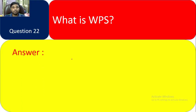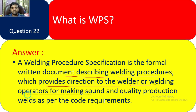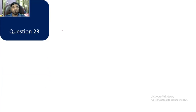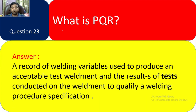Question 22: What is WPS? Answer: A Welding Procedure Specification — it is a formal written document describing the welding procedure which provides direction to the welder or welding operator for making sound and quality production welds as per the code requirement. Question 23: What is PQR? Answer: A Procedure Qualification Record — a record of welding variables used to produce an acceptable test weldment and the results of tests conducted on the weldment to qualify a welding procedure specification.